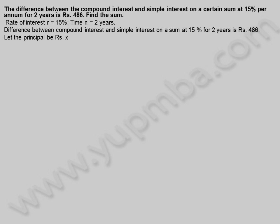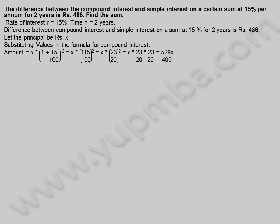Let the principle be X rupees. Substituting values in the formula for compound interest. Amount is equal to X into (1 + 15/100) whole square, which equals X into (115/100) whole square, equals X into (23/20) whole square, equals X into 23/20 into 23/20, which equals 529X by 400. So amount is equal to 529X divided by 400 rupees.